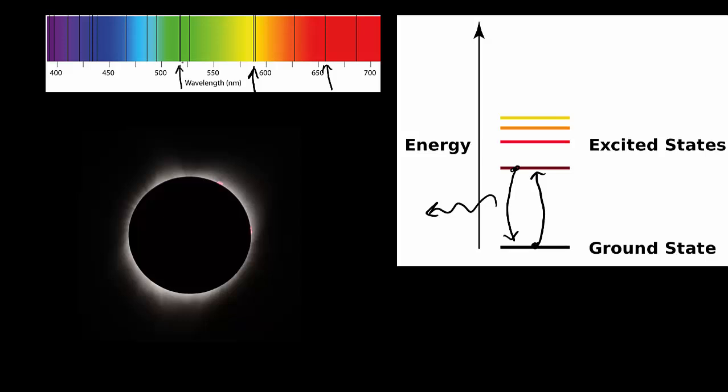The lines represent unique fingerprints of the elements that are present in that star's atmosphere. So this technique led to the discovery of helium in the Sun more than a decade before it was discovered on Earth—hence it is named after Helios, the Greek god of the Sun.